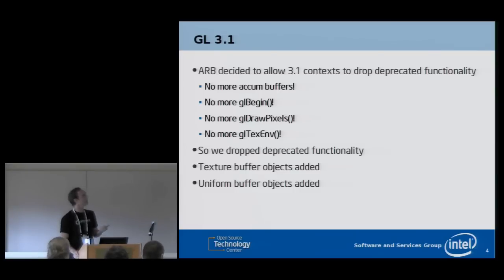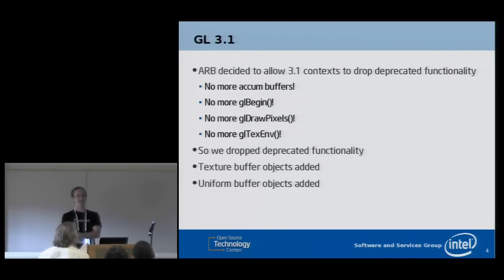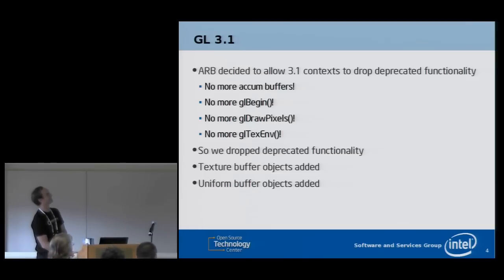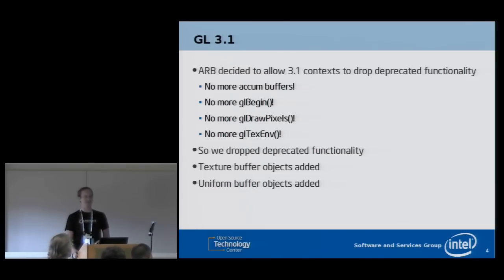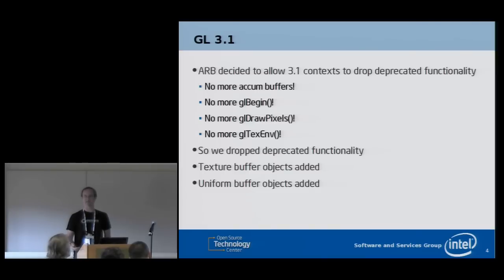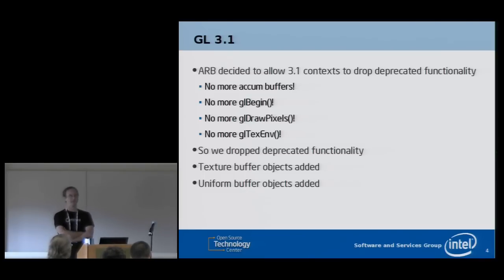They made the compatibility extension optional. Some people, such as Apple, decided not to implement it — if you want to write apps for Apple platforms and want GL 3.1 features, you get no old functionality. We saw that and said that's great, we've always wanted to drop this functionality. So there's no more accumulation buffers, no more GL begin, no more GL draw pixels, no more GL text end. All this old stuff is ripped out of the GL 3.1 context. We still implement them in GL 2 contexts, so if you just ask for GLX create context like always, you get a GL 2 or GL 3.0 context with the same functionality. But to get new functionality in 3.1, you have to explicitly ask for 3.1, acknowledging you don't get the old junk anymore.